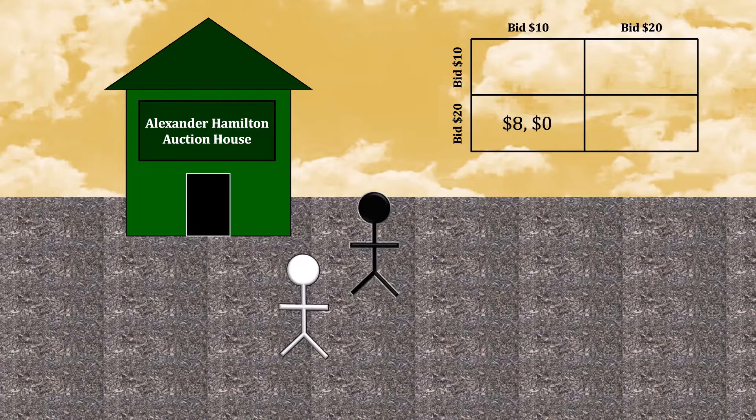If you bid $20 and your opponent bids $10, you have the highest bid. This being a first price auction, you will win the book and pay $20 to receive it. Because you value the book at $28, after subtracting out the $20 to buy the book, your net gain here is $8.